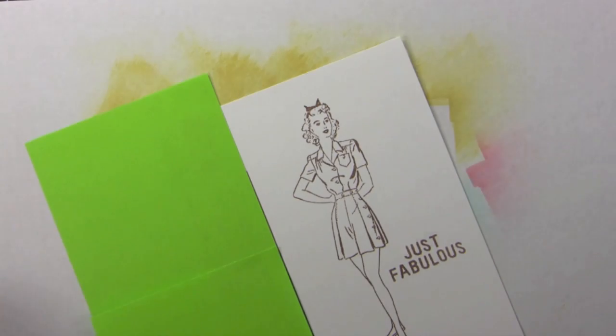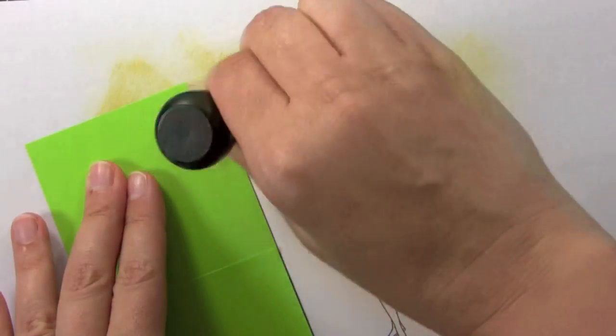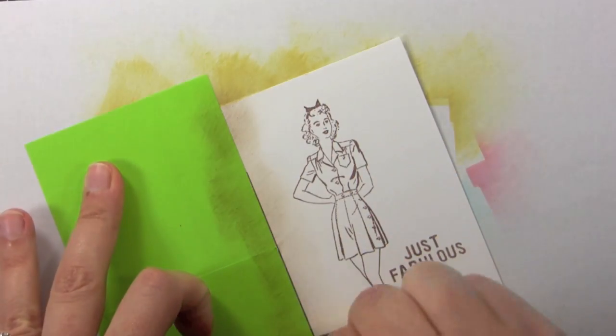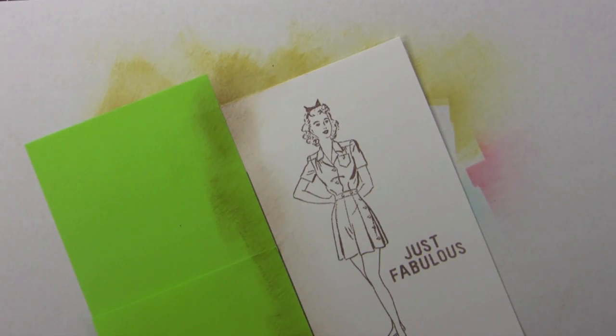So for this I'm going to be using various shades of the brown distress inks. I went ahead and grabbed a bunch. I think I got the tea dye and the walnut stain. And even the scattered straw would work good for this again. And what you're going to want to do is just start off with a light shade of brown.